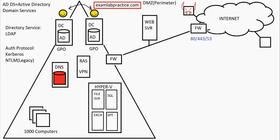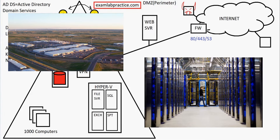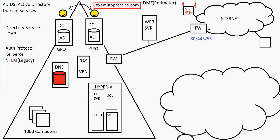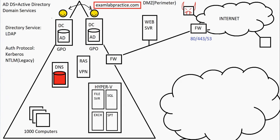With the creation of virtualization, it got companies thinking — companies like Amazon, Google, Intel, IBM, and eventually even Microsoft — that they had these massive data centers, so why not allow people to pay to host their virtual machines on those data centers? In other words, they could get people to pay them to host virtual machines so those companies didn't have to deal with everything on-premise. This is really the idea of where cloud services came from.